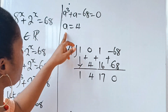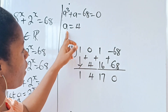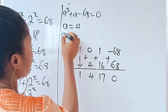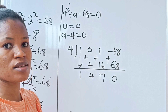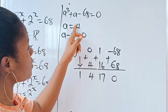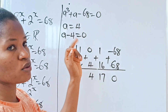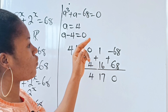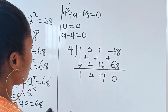Since a equals 4, that means a minus 4 equals 0. When you transfer the plus 4 to the other side, you get minus 4. So a minus 4 equals 0 is one of our factors.